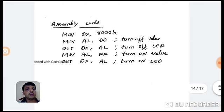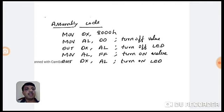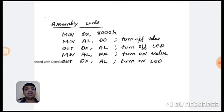The assembly code to blink LEDs: MOV DX, 8000; MOV AL, 00; OUT DX, AL — turn off the LED; then MOV AL, FF; OUT DX, AL — turn on the LED. By repeating this in a loop using a JUMP instruction with an appropriate delay, you can blink the LED. This is a typical program for connecting an LED to the 8086.